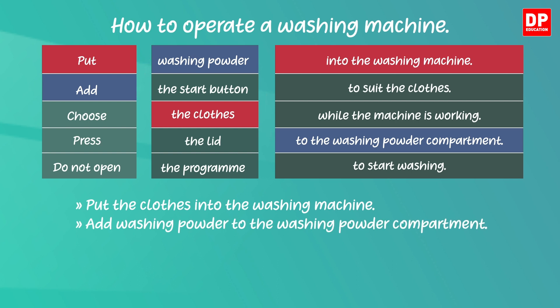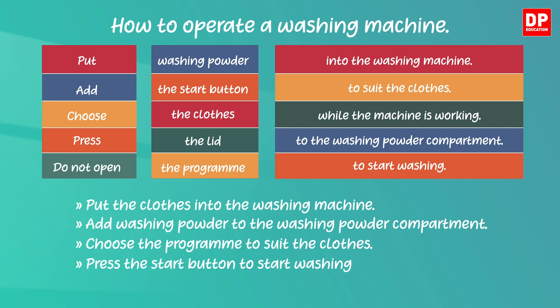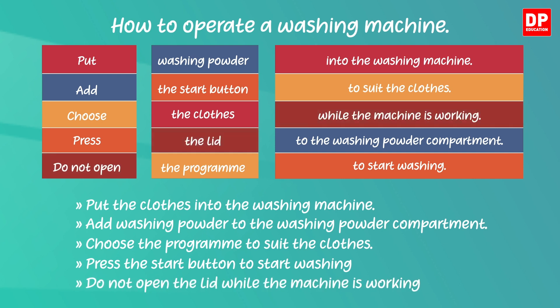Let's go to the third one. Here you have to start the instruction with the imperative verb 'choose' — choose the program to suit the clothes. Now the fourth one: press the start button to start the washing. What about the last one? It's in the negative form: do not open the lid while the machine is working. Hope you could write the instructions correctly.